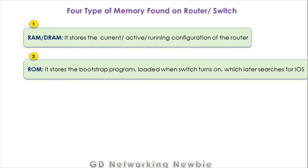The second type of memory found in a typical Cisco router or switch is ROM — read-only memory. This memory stores the bootstrap program. When a router turns on, this bootstrap program is loaded and it actually searches for the actual IOS. So the bootstrap program's responsibility is to find out the IOS — the operating system of the router.